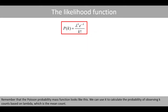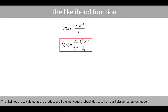Remember that the Poisson probability mass function looks like this. We can use it to calculate the probability of observing k counts based on lambda, which is the mean count. The likelihood is calculated as the product of all the individual probabilities based on our Poisson regression model.